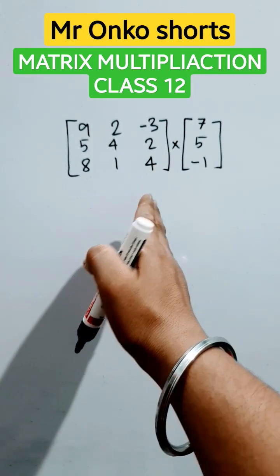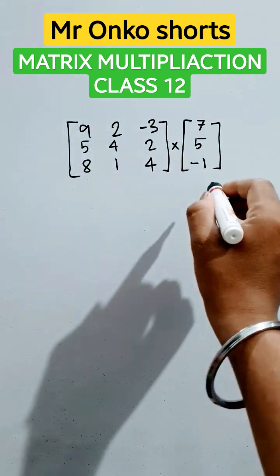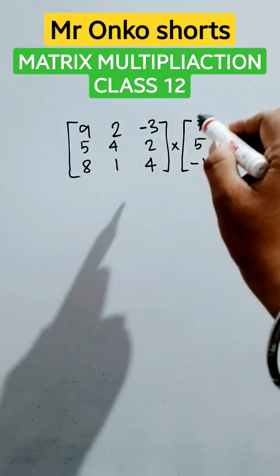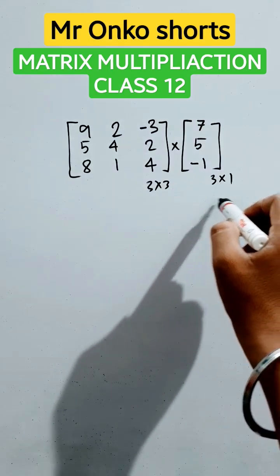Hello students, welcome to Mr. Nanko Shorts. Today, we will learn how to multiply these two given matrices where this is a square matrix and this is a rectangular matrix. It's of the order 3 cross 3 but this is of the order 3 cross 1.